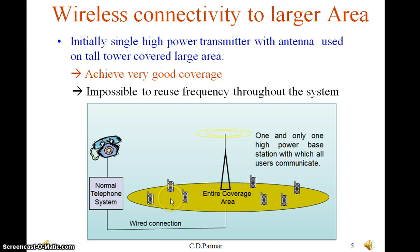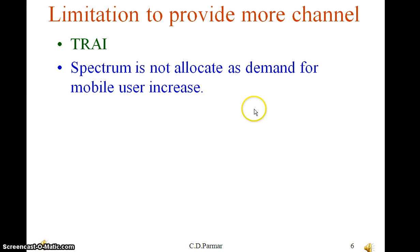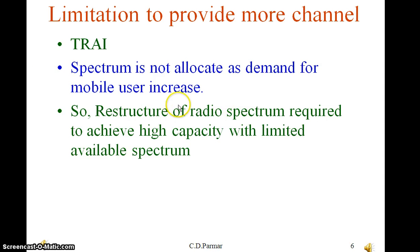When initially few users started using the service, more users demanded it. To serve more users, the service provider would require more spectrum. Every country has an authority that allocates spectrum to companies through auctions. In India, that is TRAI — the Telecom Regulatory Authority of India — which provides the spectrum. But it is not practical that every time users demand more capacity, the mobile service provider simply goes to TRAI for more spectrum. Engineers have to restructure the available radio spectrum to achieve very high capacity with limited available spectrum.